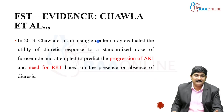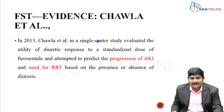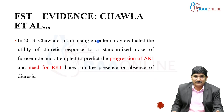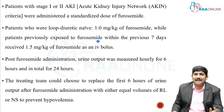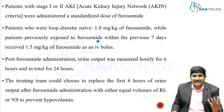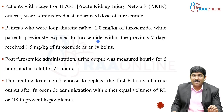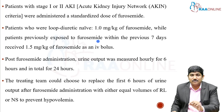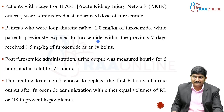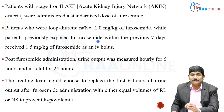The evidence for FST began with Chawla et al. in 2013, a single-center study evaluating the utility of diuretic response to a standard dose of furosemide to predict AKI progression and need for RRT. Patients with stage 1 or stage 2 AKI were divided into two groups: furosemide-naïve patients who had never received furosemide, given 1 mg/kg IV, and patients who had received furosemide in the previous seven days, given 1.5 mg/kg IV.